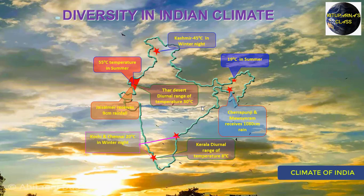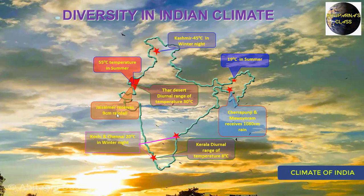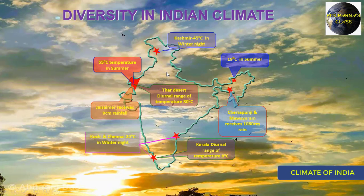Now we will see the rainfall diversity. Cherrapunji and Mawsynram receive more than 1000 centimetres of rainfall in the monsoon season. But Jaisalmer receives only 9 centimetres during monsoon. Two key things to remember: temperature decreases from south to north, and rainfall decreases from east to west.